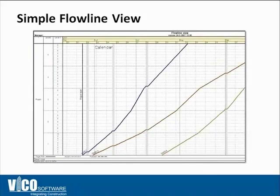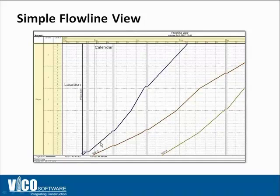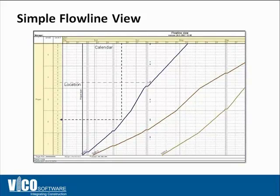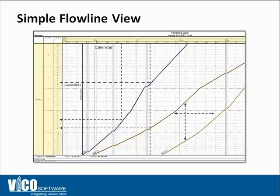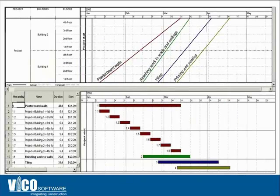In the Flowline view, the top shows a calendar and the left side shows a location — in this case, five floors. You can see how crews pass through these locations, represented by a simple line. It's easy to see where certain crews are at any point in time, how far apart they are in terms of locations, and the time and location lag between two crews. You can also analyze productivity and see which areas are being utilized or underutilized.